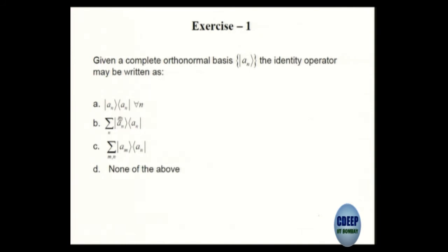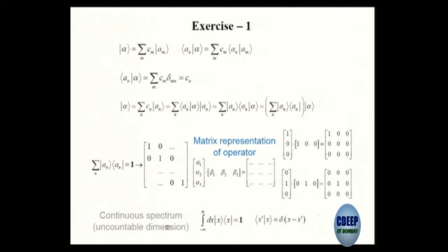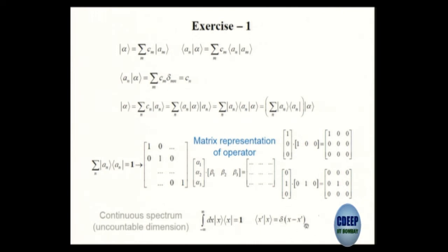Each of these terms is giving you one of the elements of the diagonal matrix. As an aside, for continuous spectra, the inner product between basis vectors does not give a Kronecker delta — it gives the Dirac delta function, which I think you are all familiar with. That is the difference when you work with continuous variables versus discrete variables. Both are possible to work with; there are some small differences along the way.